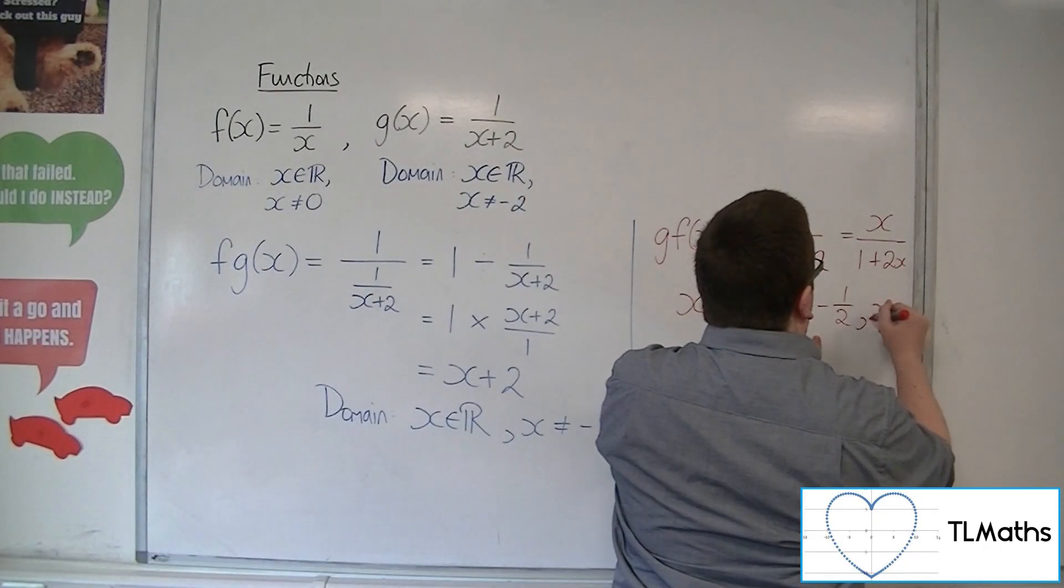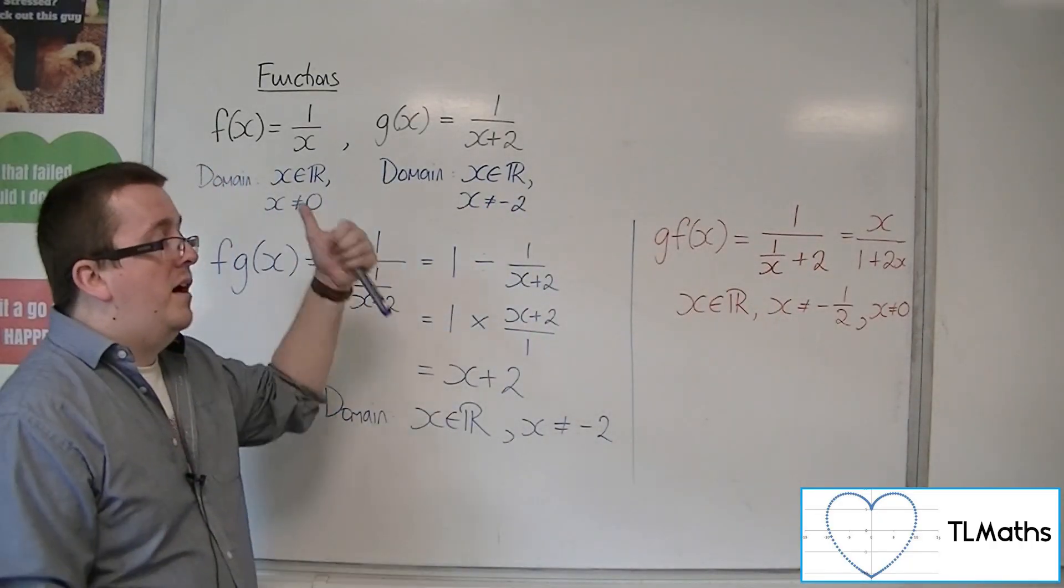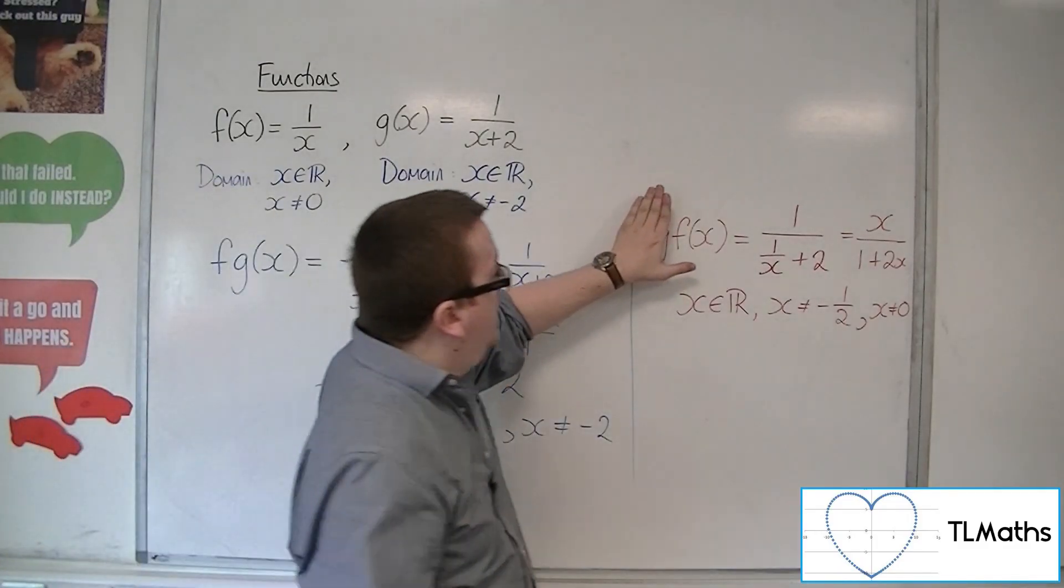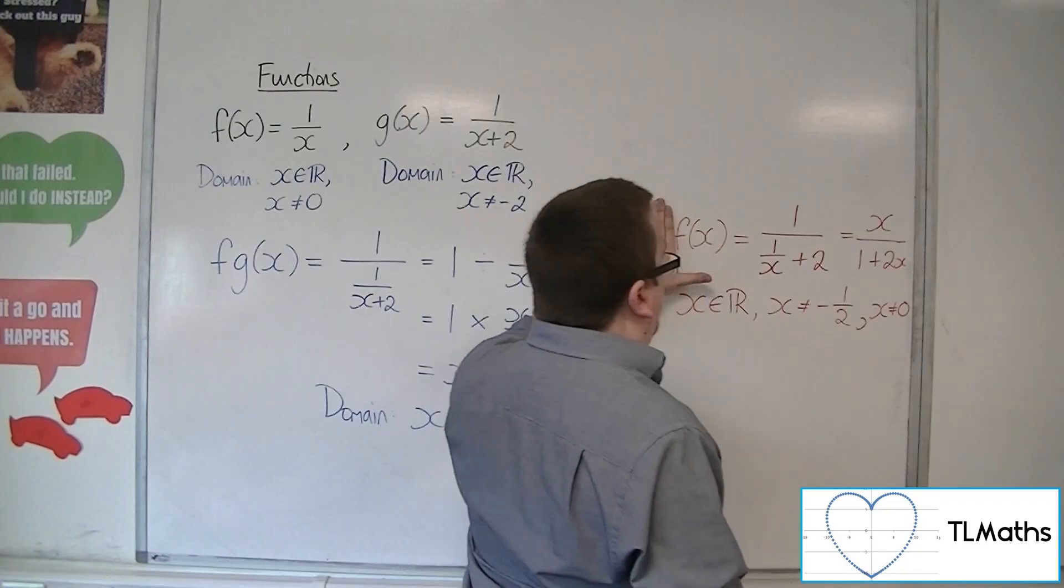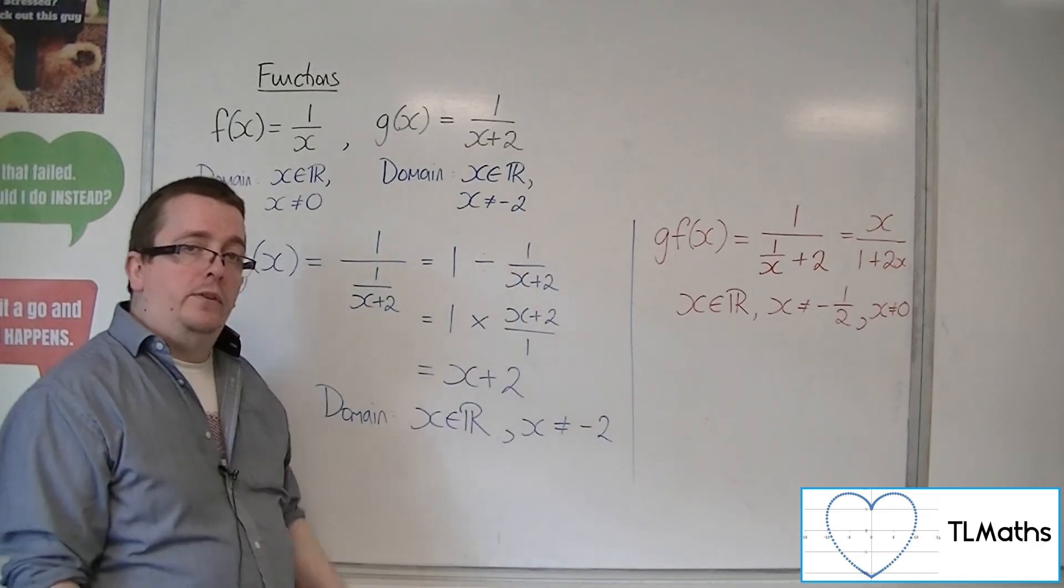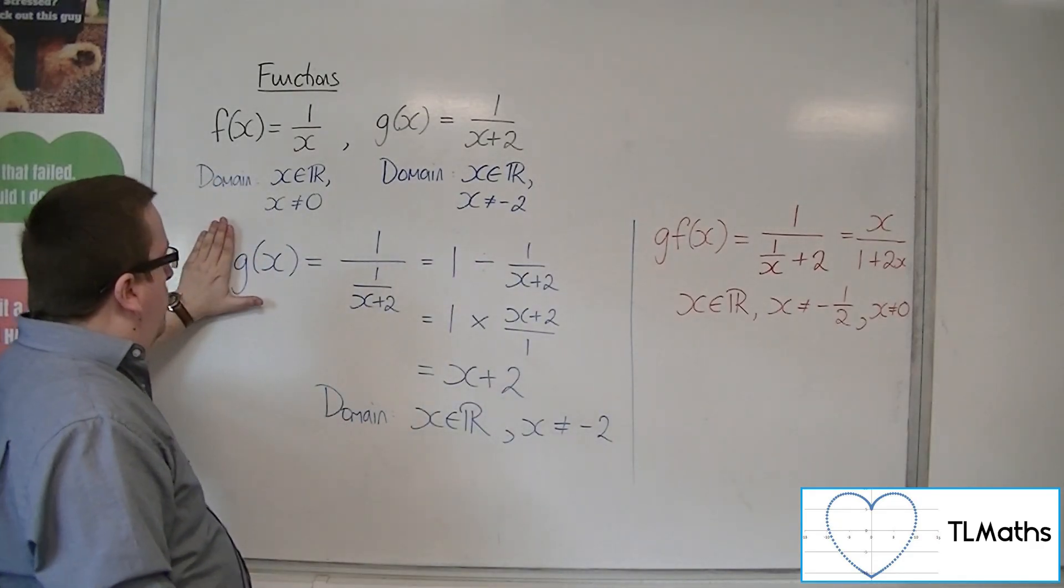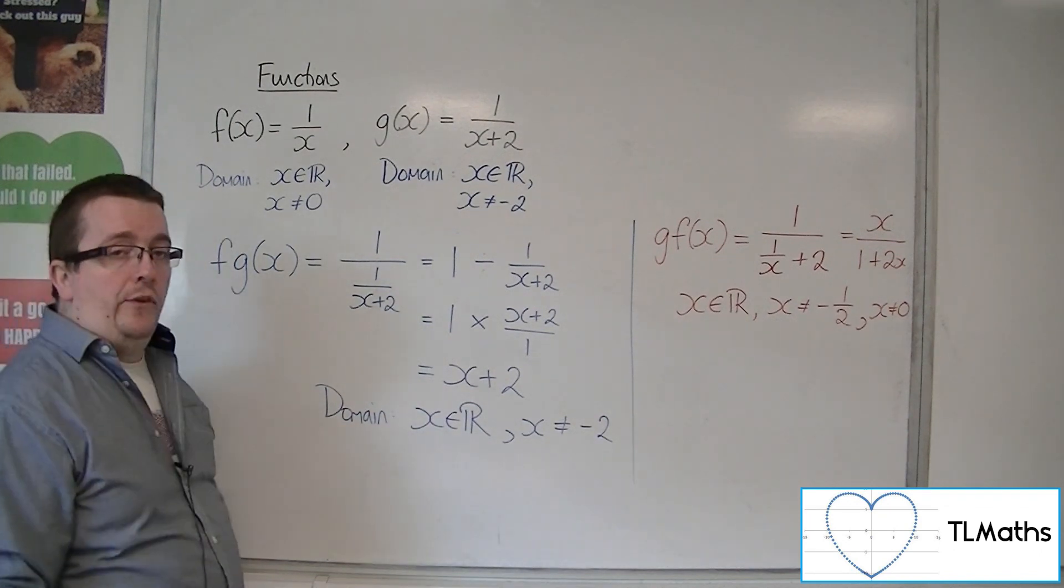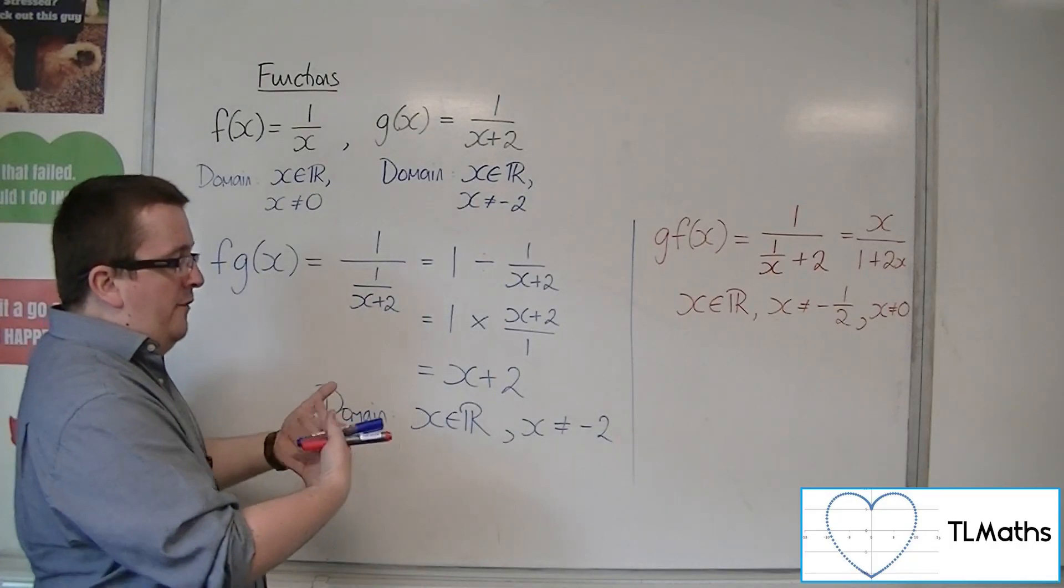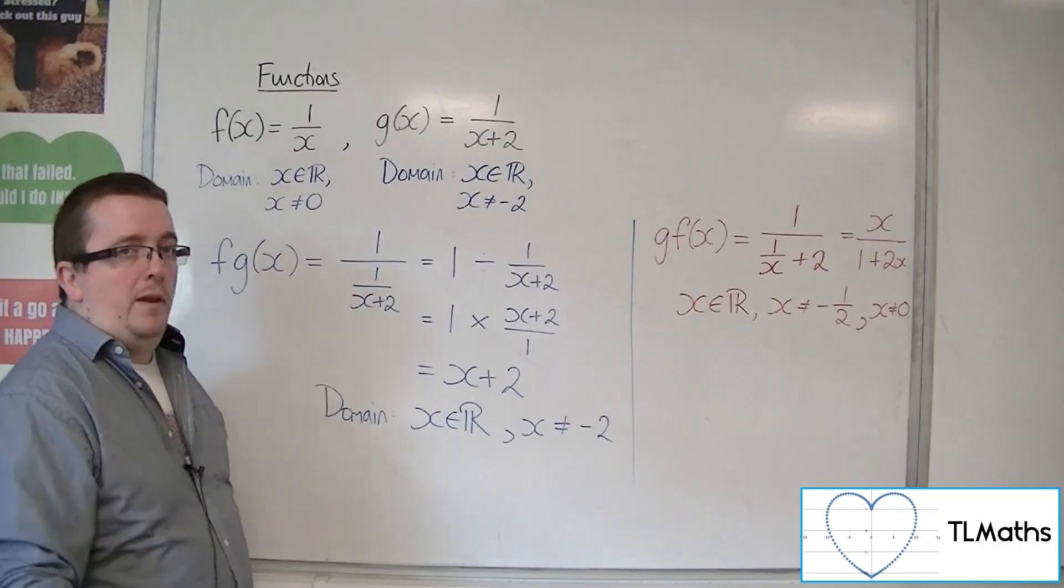So I must have an added piece of the puzzle where x can't be either 0 or minus 1 half: 0 from the f of x, so whatever the domain was for f of x, and now whatever the domain is for g f of x. In this case, the domain was whatever it was for g of x and whatever it is for f g of x. So it is the two domains effectively overlapping, and all of the restrictions must be in place.